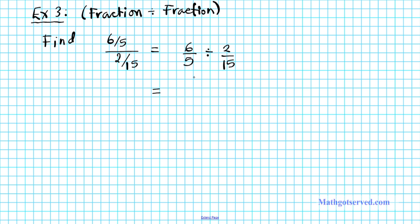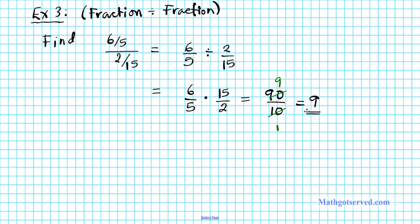You drop the dividend as it is: 6 over 5. You change the divide to a times. And you reciprocate or flip the divisor to get 15 over 2. Now multiply across: 6 times 15 is 90, and 5 times 2 is 10. We can divide by 10: 10 goes into 10 once, and 10 goes into 90 nine times. So 9 divided by 1 is simply 9, and there goes your final answer.